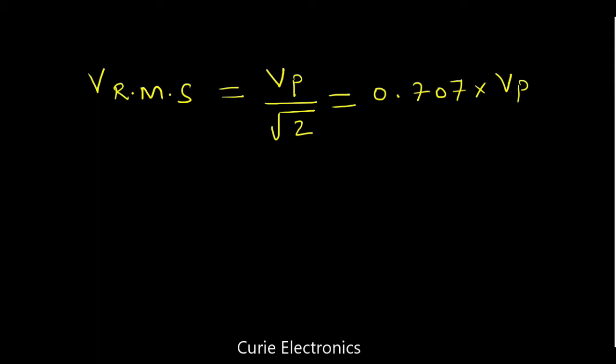What about V average? For the sine wave, what is the V average? V average is 0.637 times of Vp.